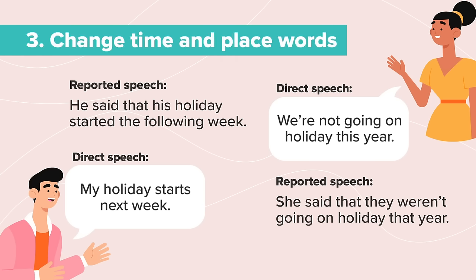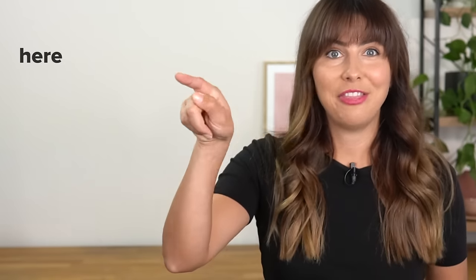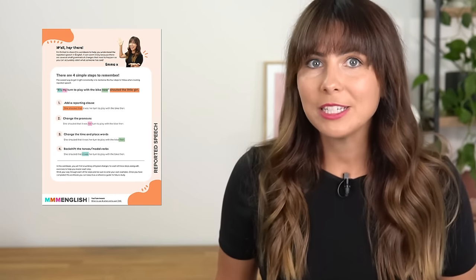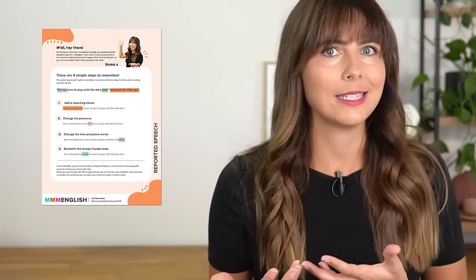The third step is to change any time and place words. So here, "next week" becomes "the following week," and "this year" becomes "that year." The time references need to change in reported speech — words like "here" and "there", "this" and "that" all need to change. We do this to create a sense of distance or time past. It can be a little tricky to guess exactly how these words change, so I've put together a list of typical changes to time and place words in the worksheet I've created for you.